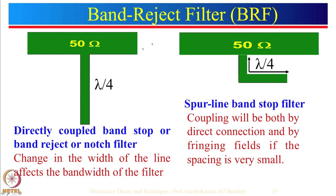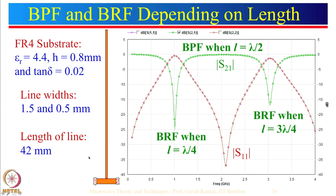For a band reject filter design, we use the same lambda-by-4 line length, but instead of a short circuit at the end, we make it open. If it is open and the length is lambda-by-4, the open acts as a short circuit, so nothing passes from port 1 to port 2. We took an example with a transmission line from port 1 to port 2 and a resonator connected to it. For a 50-ohm line impedance on FR4 substrate, the line width is 1.5 mm, the resonator width is 0.5 mm, and the line length is 42 mm.